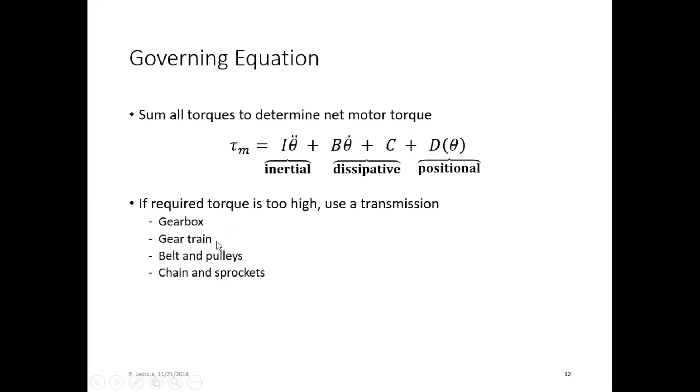Other examples are gear train, belt and pulleys, chain and sprockets. These are all ways that you can increase your torque. It has the side effect of decreasing speed.